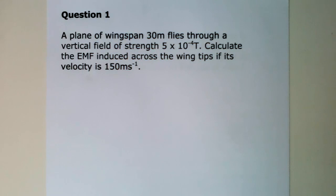Firstly, we will start with an example of a conductor cutting lines of flux. A plane of wingspan 30 metres flies through a vertical field of strength 5 times 10 to the minus 4T. Calculate the EMF induced across the wingtips if its velocity is 150 metres per second.